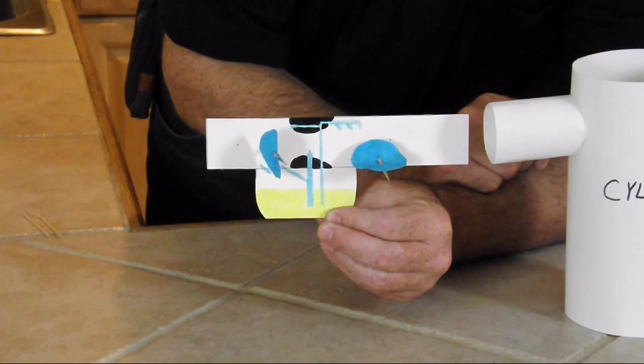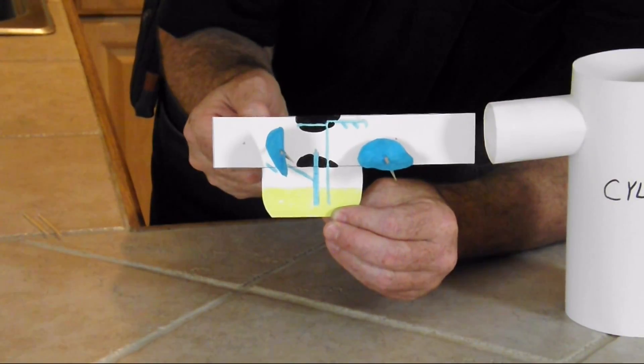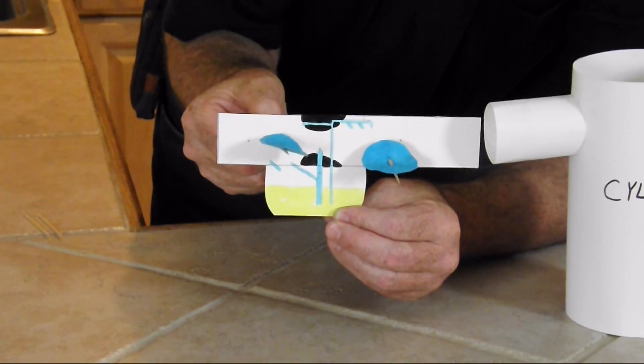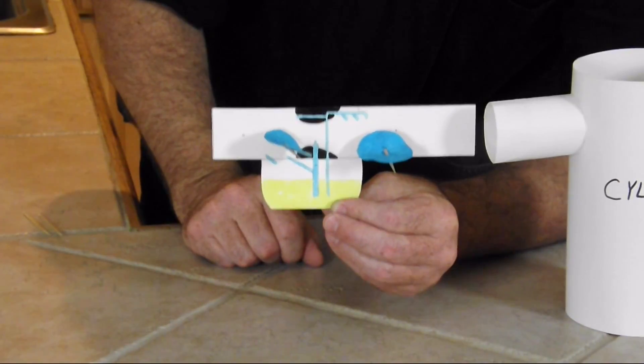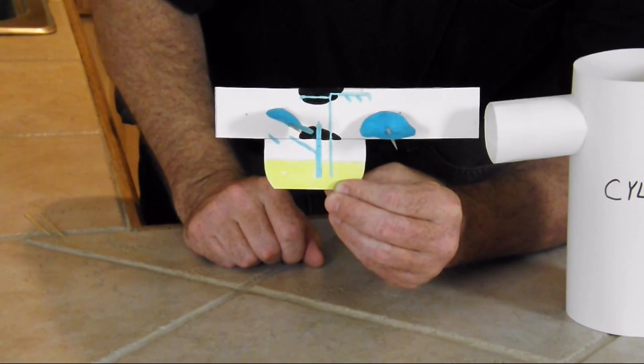That's only when we're starting it. Once the engine is running, we're going to open our choke to allow the maximum flow of air fuel through this carburetor.